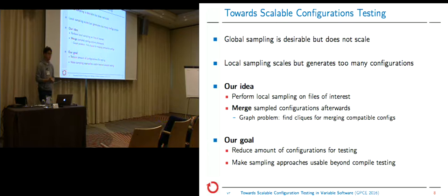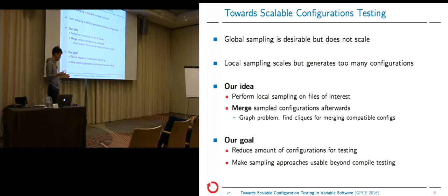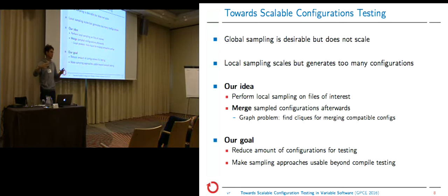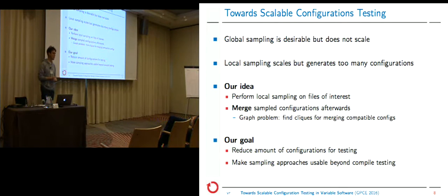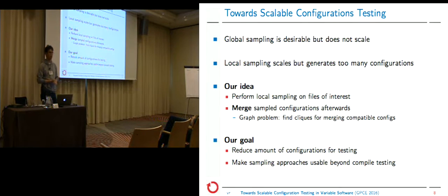Global sampling is desirable because we have a global view of everything and can test it at once, but it does not scale. Local sampling scales, but it generates too many configurations. The idea we had was to apply local sampling because it scales, and then simply reduce the amount of configurations afterwards. We need to somehow merge those configurations, and the idea was to abstract this as a graph problem — merging configurations means finding cliques. We draw an edge between configurations that are compatible, and if we find a clique, we have a subset where all configurations can be merged together.